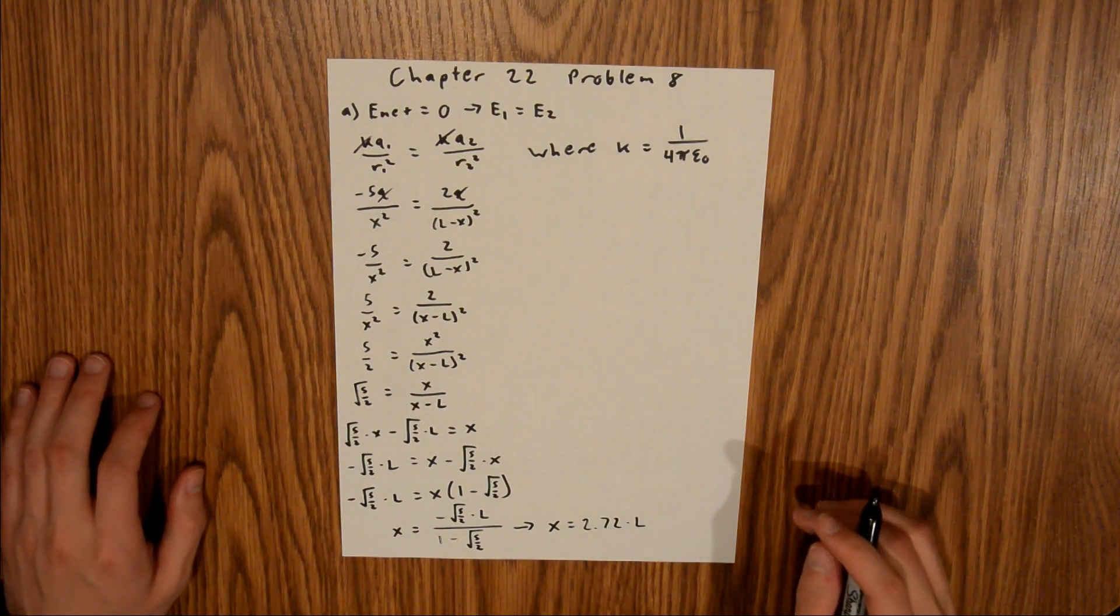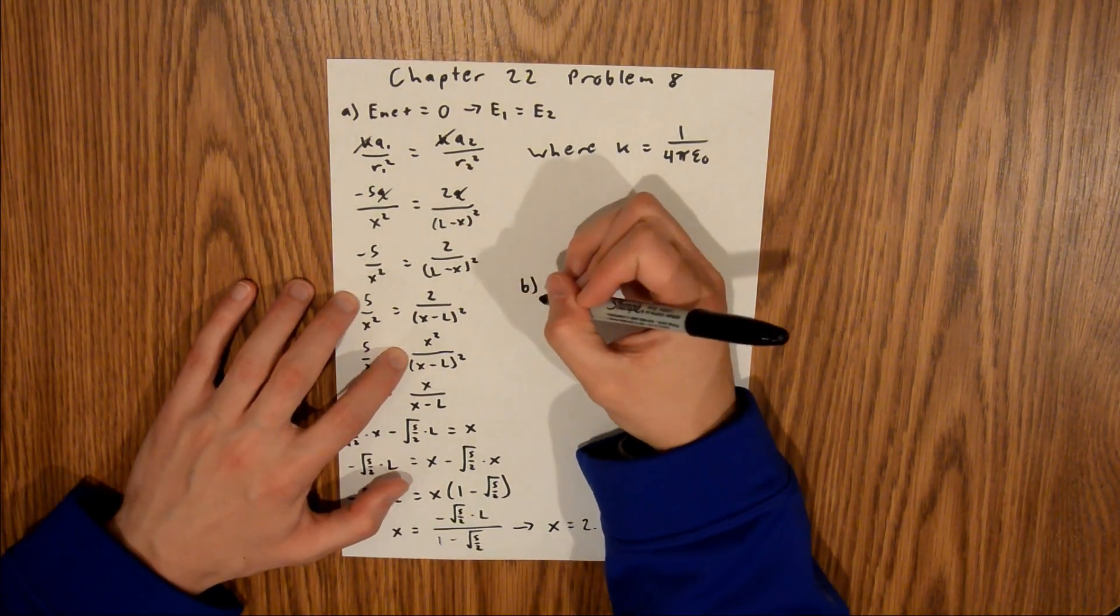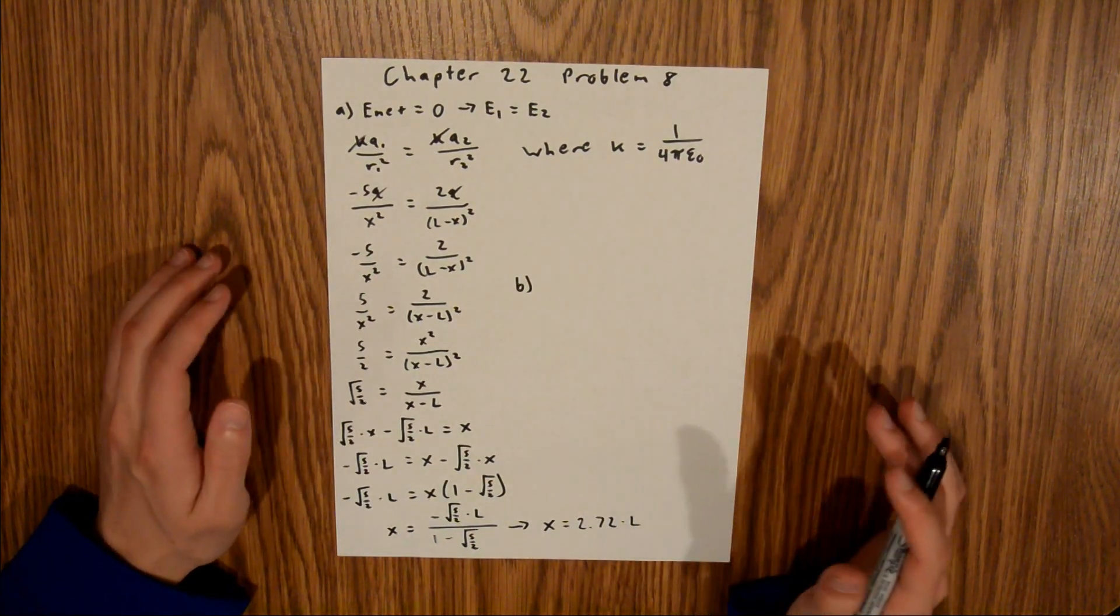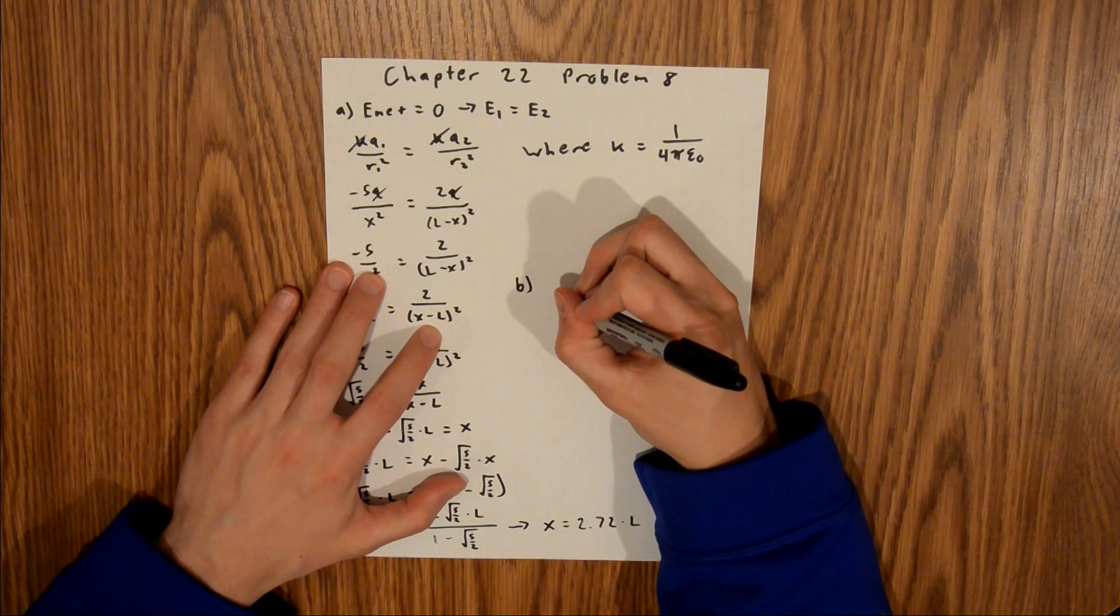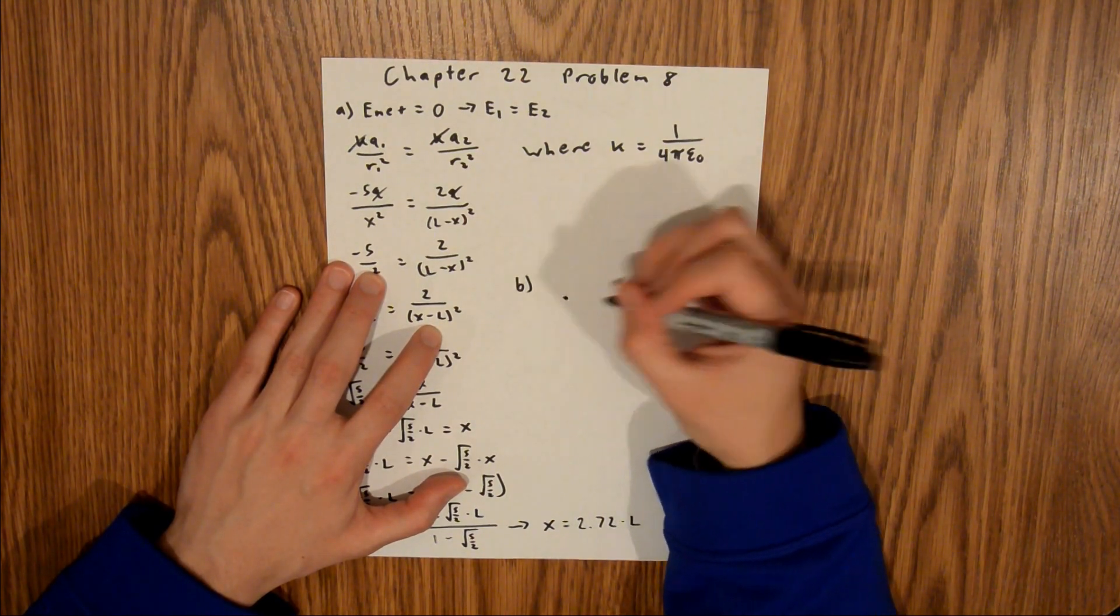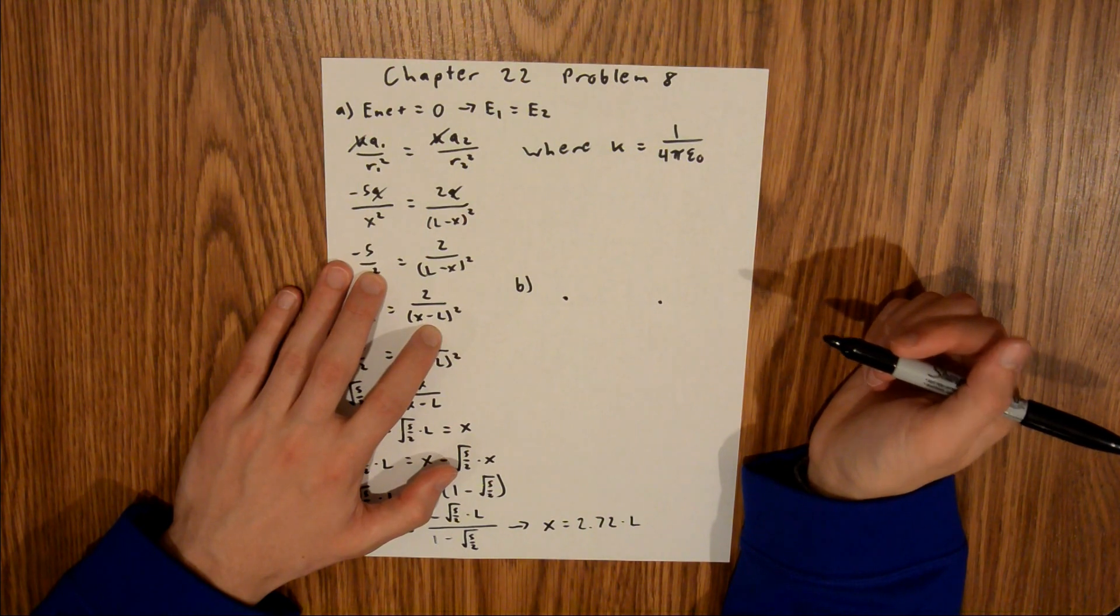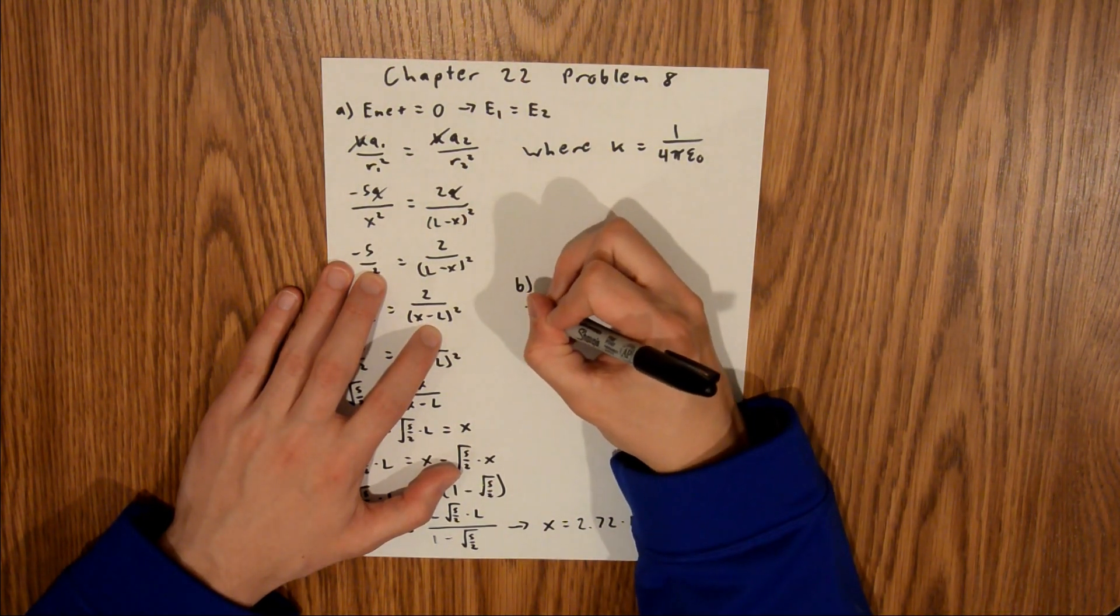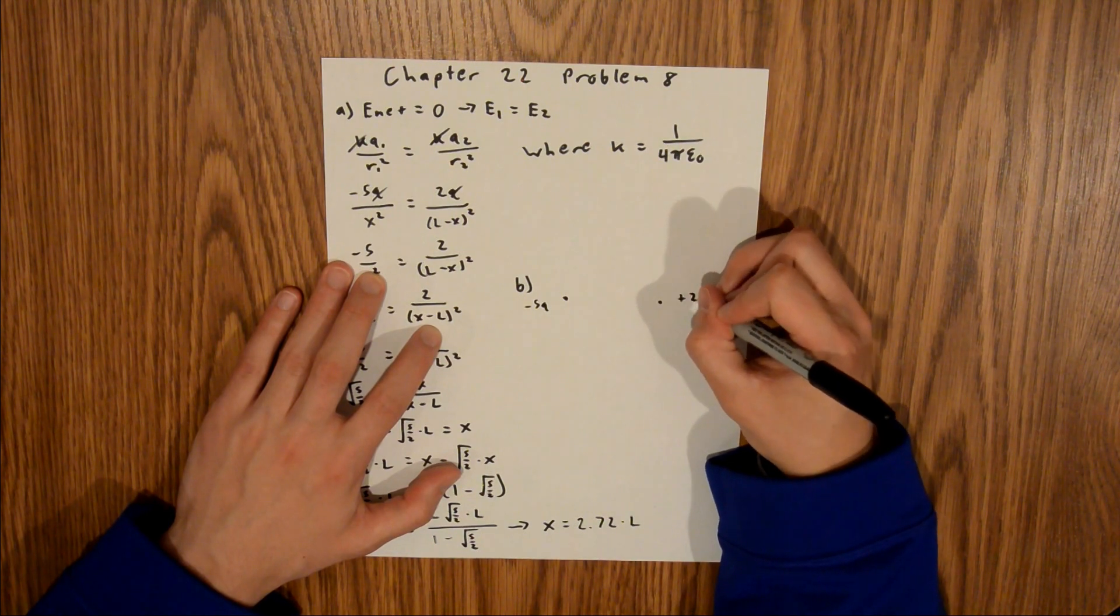And so that's it for part a, and I guess part b I'll just do right here. So for part b, we're asked to draw the electric field lines. So what we have here is we have two particles, let's just draw them out, say that's one particle, and that's one particle. And so we're told this one is negative 5q, and that this one is positive 2q.